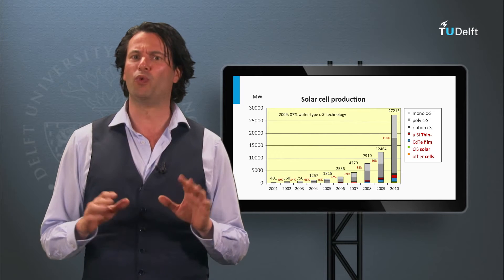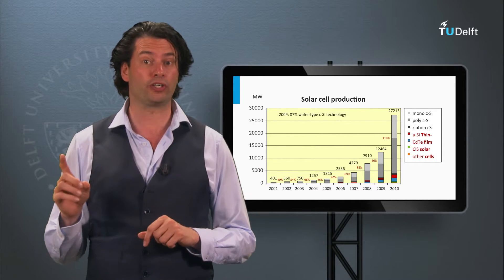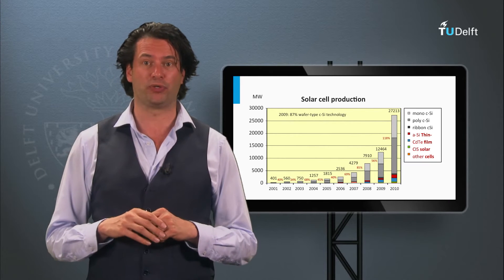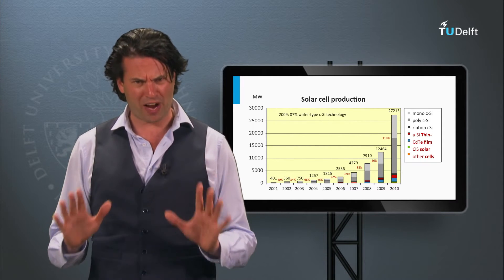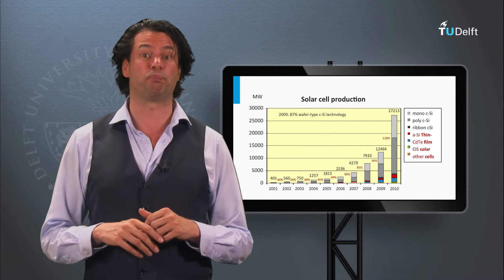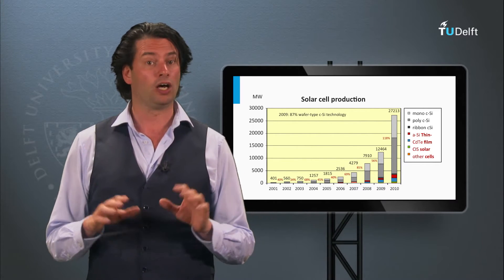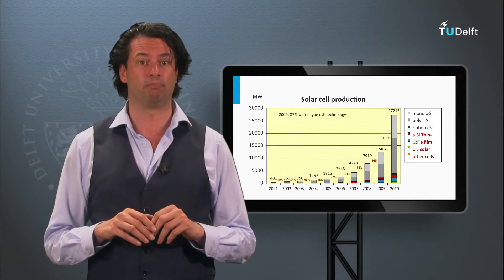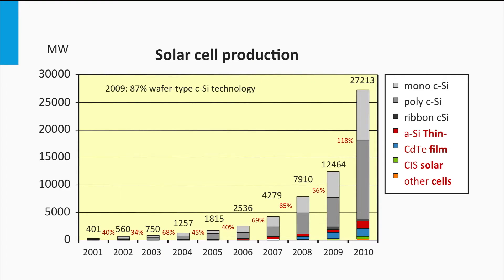This figure shows the worldwide solar cell production. The vertical axis represents the annual production, expressed in total produced power capacity in MW, while the horizontal axis represents time. The solar cell production is increasing exponentially every year. The red numbers represent the annual relative increase in production capacity relative to the previous year, showing that production increases annually by more than 40%, which is an unprecedented growth.